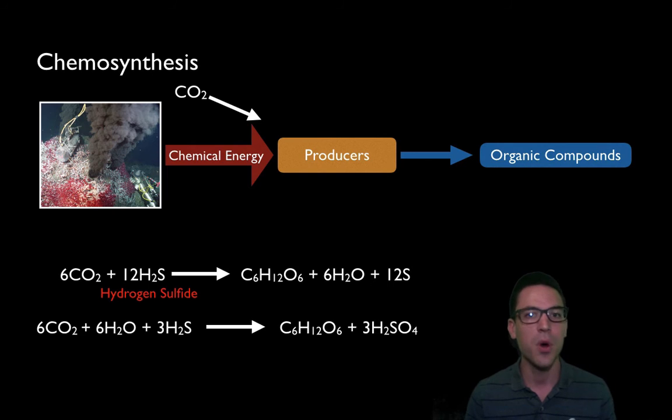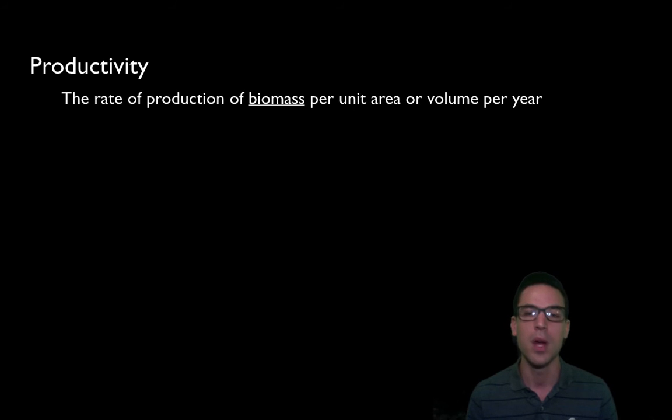Now when we talk about chemosynthesis and photosynthesis, how productive it is is going to affect the rest of the ecosystem. If we're not really doing much, then there's not going to be that much energy and that much organic compounds for the rest of the organisms. So when we talk about productivity, we're talking about how much photosynthesis or chemosynthesis is taking place. So one way to define this is the rate of production of what we call biomass per unit area or volume per year.